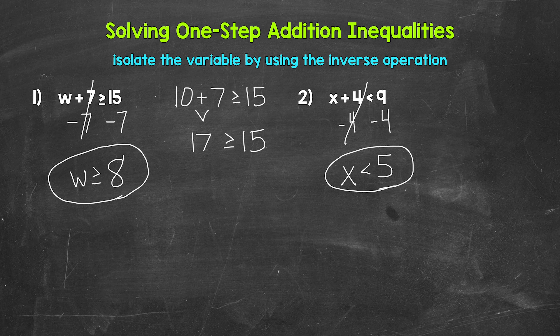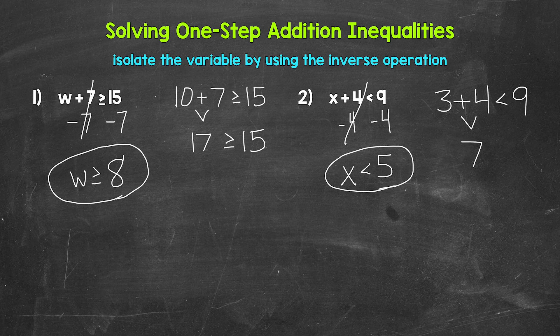So any value less than five is a solution of this inequality — it makes it true. Let's check one; we can pick any number less than five. Let's use three. Plug in three for x: three plus four is less than nine. Three plus four gives us seven, and seven is less than nine. So we are correct. Our answer for number two: x is less than five. Any value less than five will work and make this inequality true.